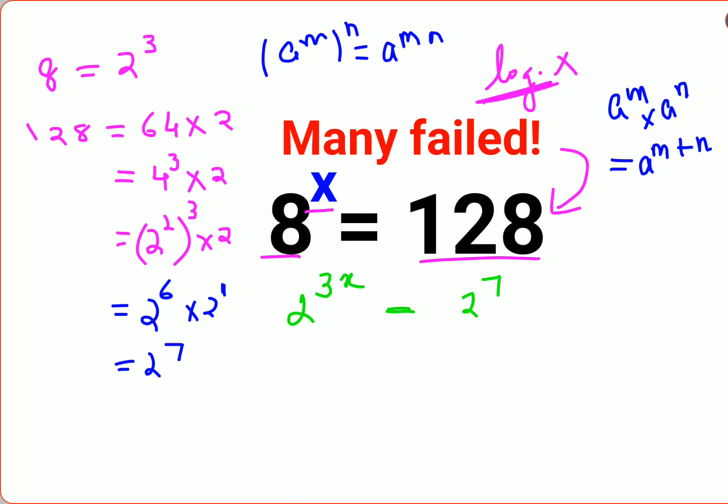Now in indices all of us know that if the bases are same you can directly equate the indices. In order to find the value of x you have to just divide both sides by 3. So therefore I can say value of x comes out to be 7 upon 3, which can also be written as 2 and 1 by 3.